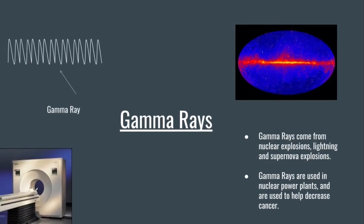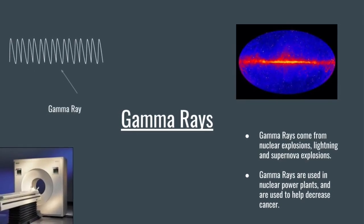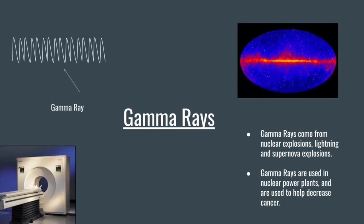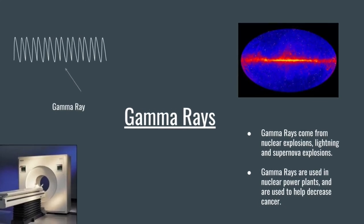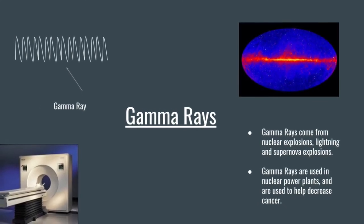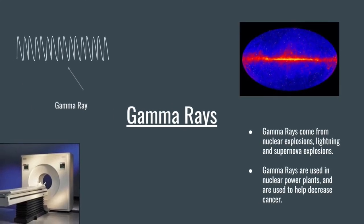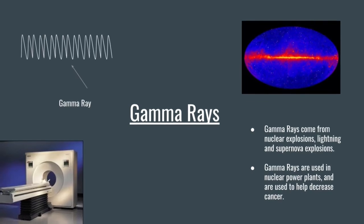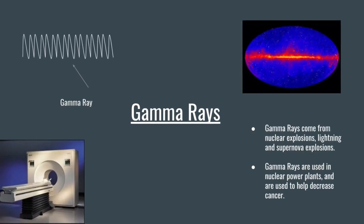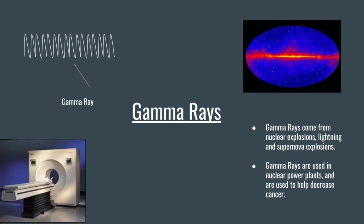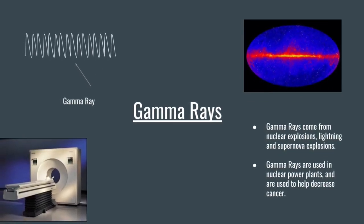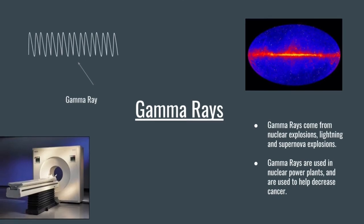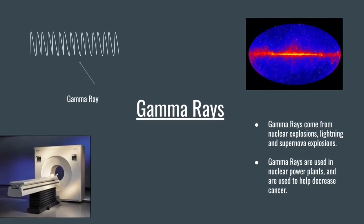Gamma rays have wavelengths that are less than 10 picometers in length and frequencies higher than 190 Hz. Gamma rays come from nuclear explosions, lightning, and supernova explosions. They are used in nuclear power plants to get energy and are used in the medical field to help decrease cancers. Thank you.